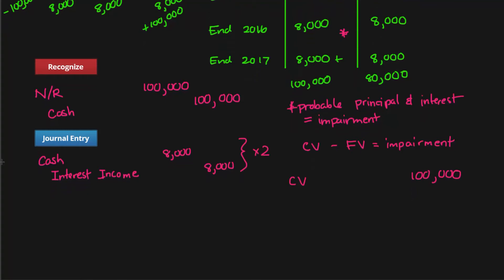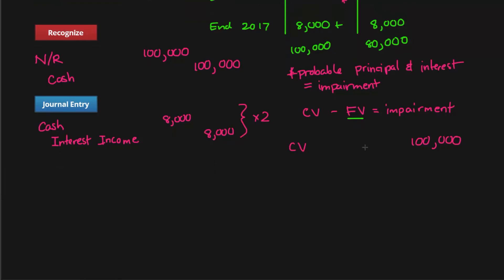Next we need to find the fair value because that is the second part to figuring out the impairment charge. I'm going to find the fair value by discounting the cash flows on our expected note. Present value of the single sum part of the note, which is the $80,000 that's going to be returned to us, equals $80,000 divided by (1 + 0.08). There's only one year left on this contract, so we're going to use one instead of three, and that amount equals $74,074.